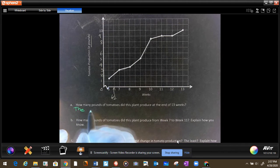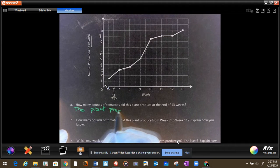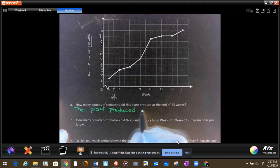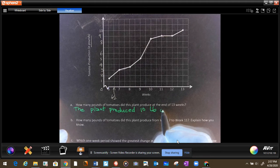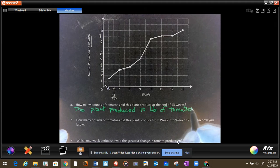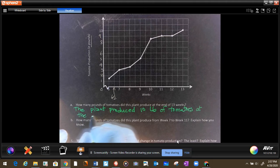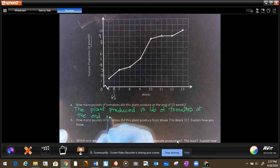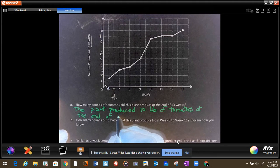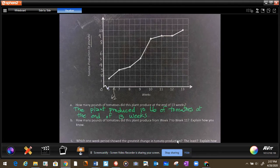So we're going to write the answer. The plant produced 10 pounds of tomatoes at the end of 13 weeks. So there is the answer. We used the graph to answer the question. Let's look at question number 2.